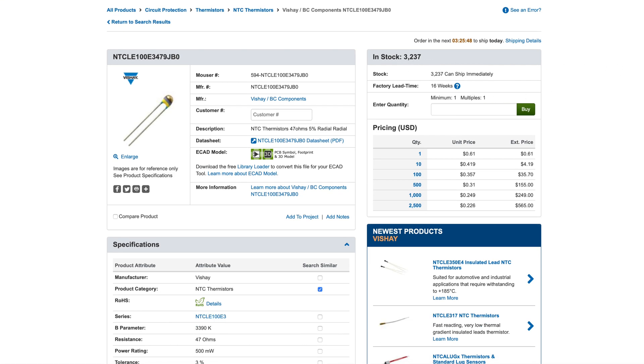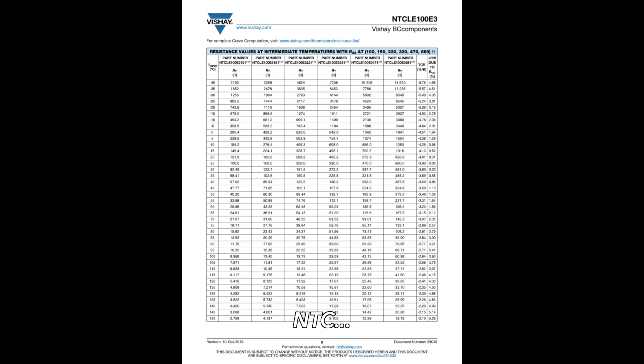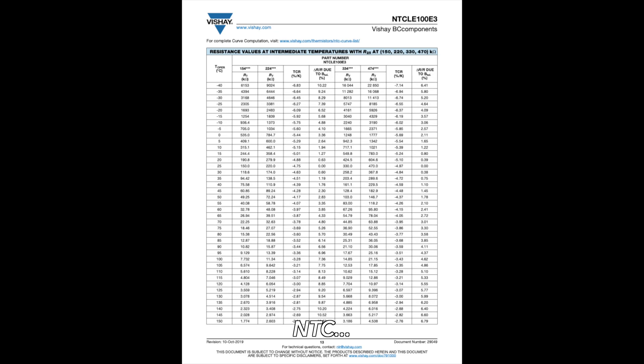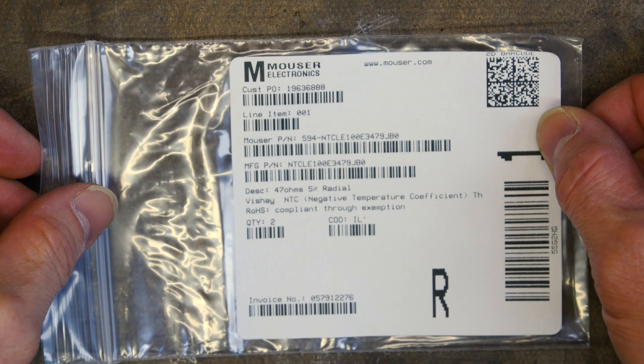Let's go over to Mouser and try to find a thermistor with the right characteristics to fit our application. I download the specification sheet from Vishay and try to find the right thermistor for my application. They have several thermistors and they operate in different temperature ranges and different ohm ranges. So finding one that is close to the value of what I need is just a matter of pouring over the data. I finally find one and order it.